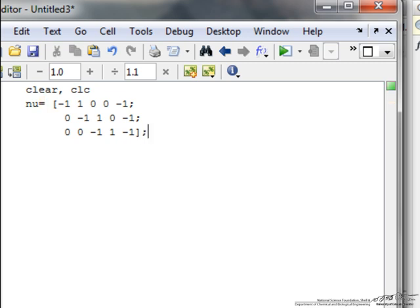Where this semicolon indicates something different, this indicates I don't want MATLAB to print out the value of the matrix while it is doing the solution. I am going to do the same thing, define R as a matrix, and this is a five by one matrix, and it has the measured production rates.